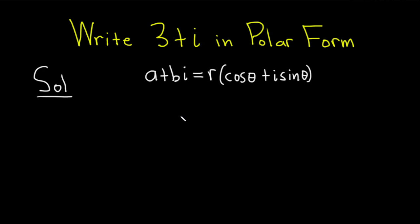There's a bunch of formulas you can memorize for this. I just like to memorize the formula for R. R is called the modulus of the complex number, and the formula for R is R equals square root of a squared plus b squared.